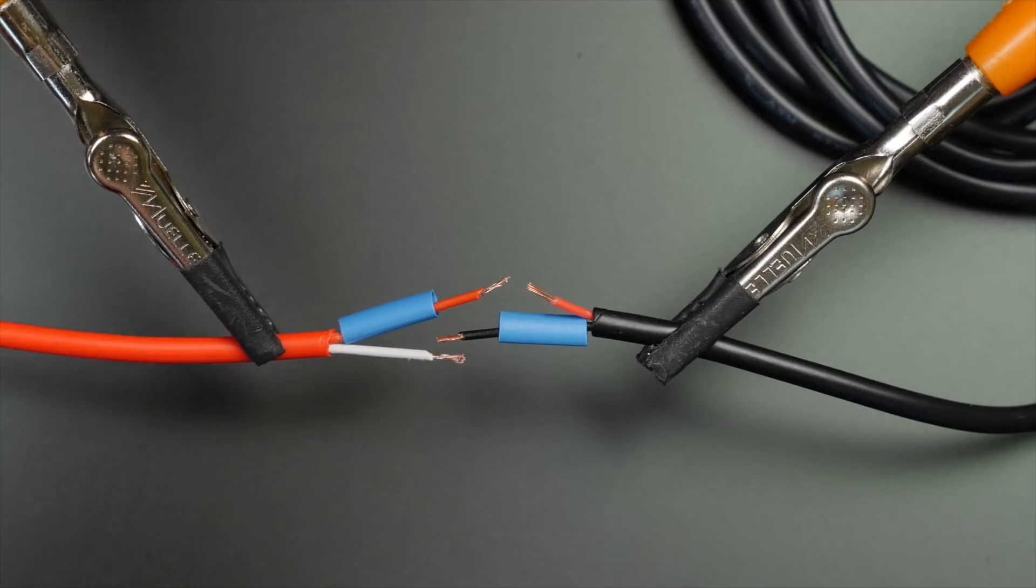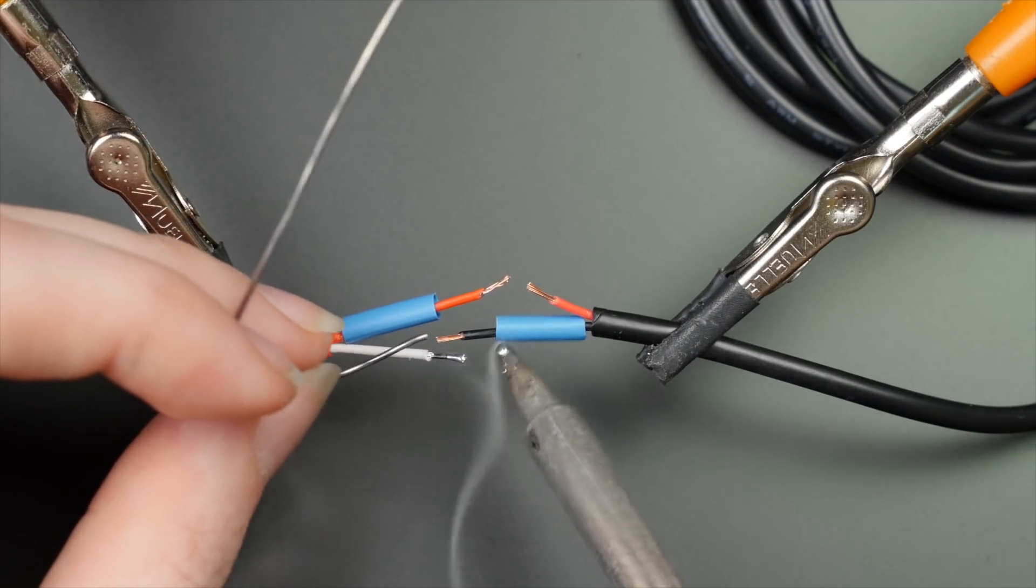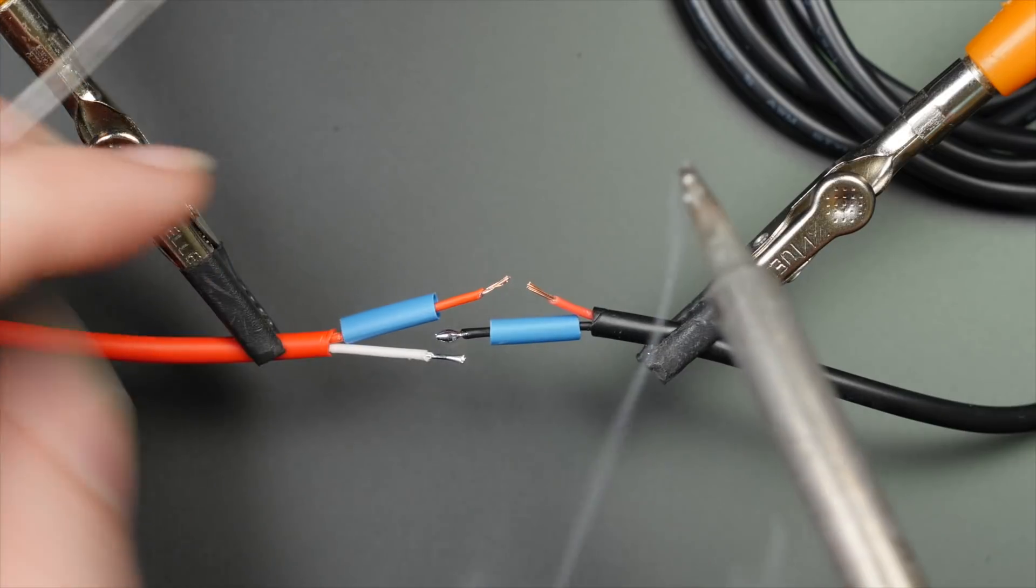The trick here is to get the pair of connections to be the same length but offset the solder joints. So cut and strip your wires as you see here.